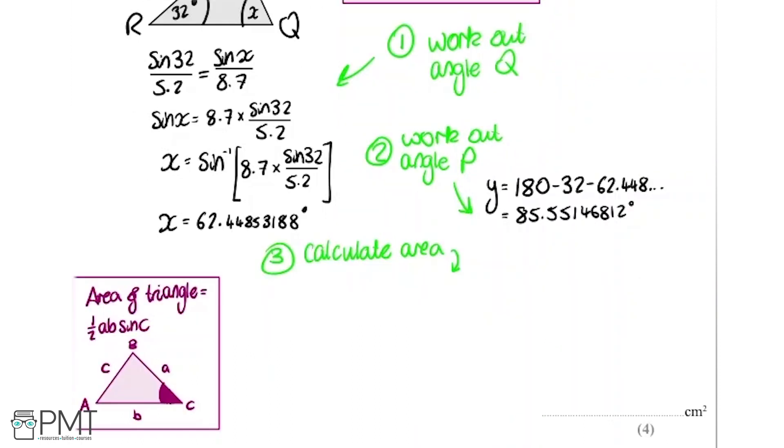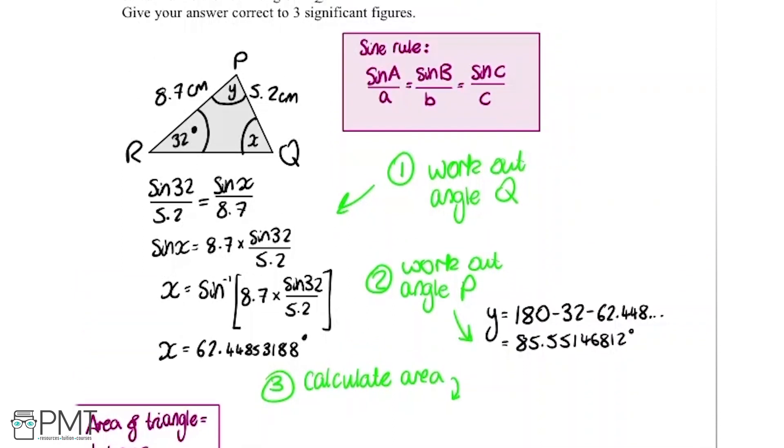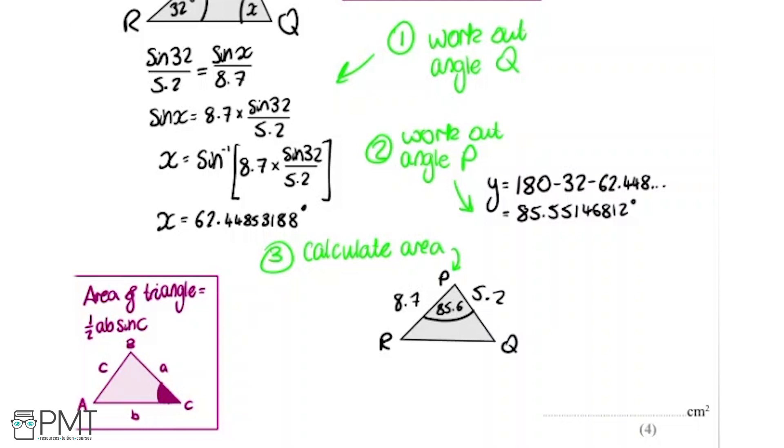What we're going to do is use this formula for the area of a triangle, which says the area of a triangle is half AB multiplied by sine C. If you think about it in this triangle here, we've got the angles ABC, and then the sides corresponding to that are the ones opposite to it. To work out the area of this triangle, we would need this angle here and the two sides that are connected to the angle. If we think back to the question, we've got that now because we've managed to work out this angle here, we've got this angle and these two sides connected to it.